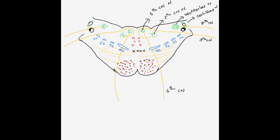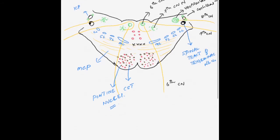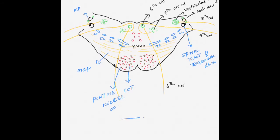The spinal tract of the trigeminal nerve extends from the level of the pons down to the upper cervical cord — a very long structure — located on the lateral side after the lateral lemniscus. We also label the inferior cerebellar peduncle and the middle cerebellar peduncle, along with the corticospinal tract and the various pontine nuclei. This completes the cross-section of the pons.